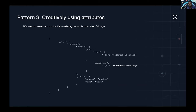This makes it dynamic — X-Hasura-Timestamp is going to change every time. Many places have shown that it's not always obvious what attributes a user should have. You can be as creative as you want, depending on your use case.